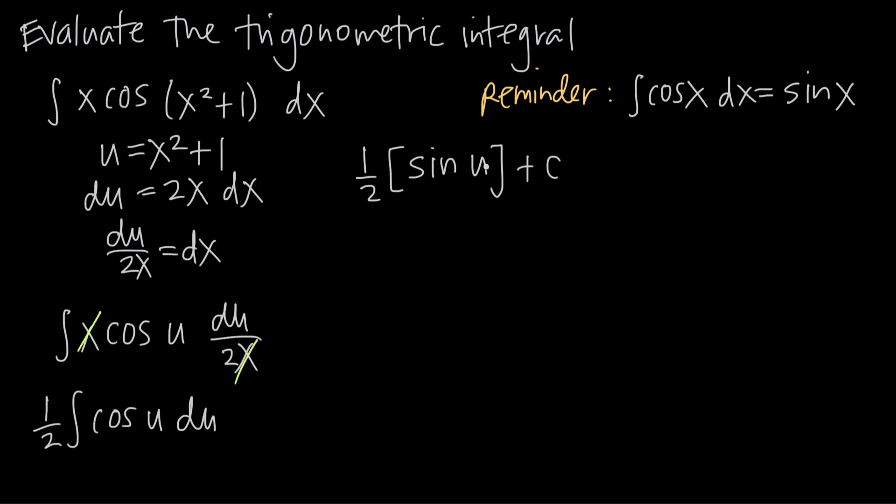So back substituting now for u, we know that u is x squared plus 1. We get 1 half times sine of quantity x squared plus 1 plus c. And this is our final answer, the integral of this original function.